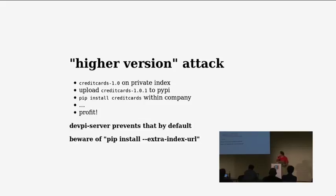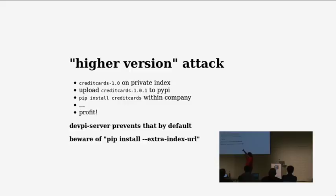There's what I call the higher version attack — there are also variants of this. Let's say you have a credit card release file that contains your credit card processing in your web application. You put this on a private index and somebody — the attacker — uploads credit cards with a slightly higher version number to PyPI. If you install against the production index that inherits from root PyPI, you're actually going to get the PyPI version, because somebody occupied your private name on PyPI.